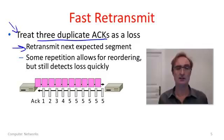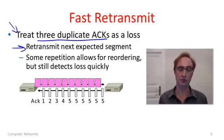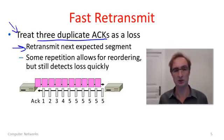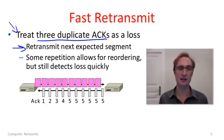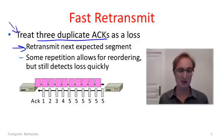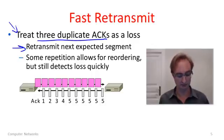Three might sound arbitrary — why not two or four? Well, some small number like three allows a little bit of tolerance for packet reordering that could occasionally happen in the internet, which will also cause duplicate ACKs. Yet it still detects any actual loss quickly.